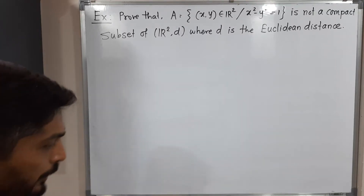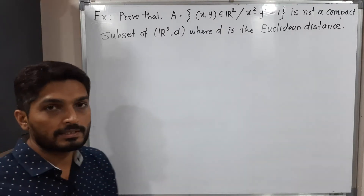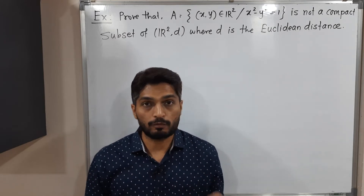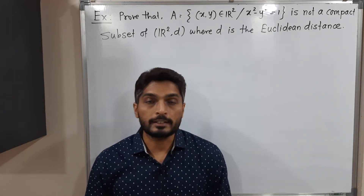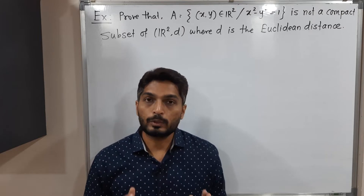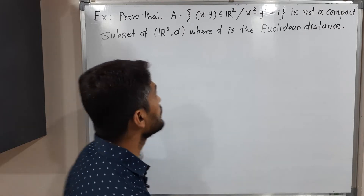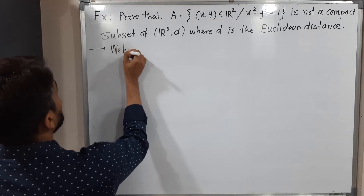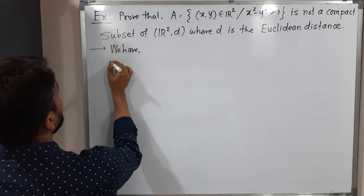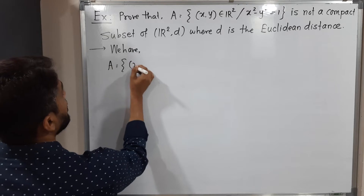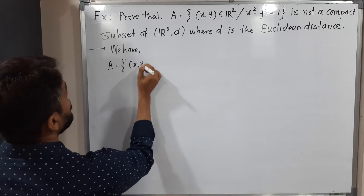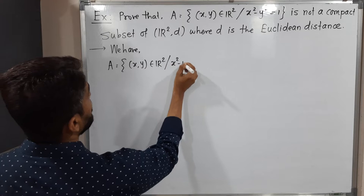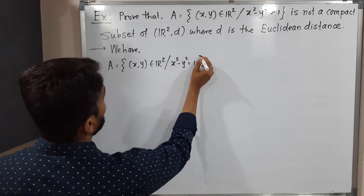Hi everyone. In this video we are going to discuss this example. One set has been given to us which is a subset of R2 and we have to prove that it is not a compact set. Let me write the given set first. We have the set A equal to {(x,y) belonging to R2} such that x² minus y² is equal to 1.